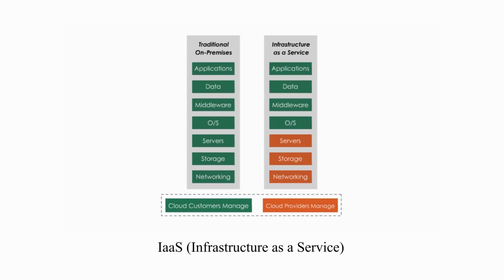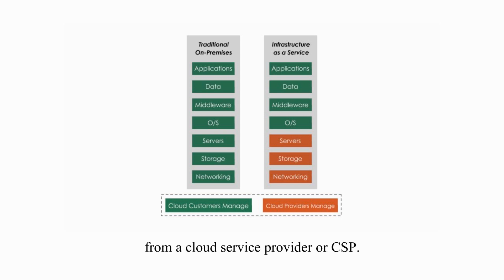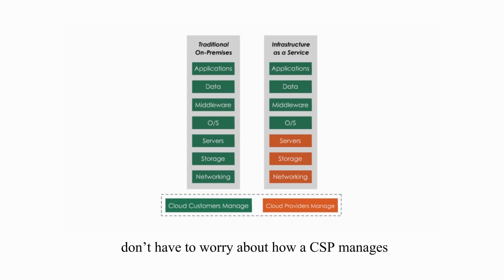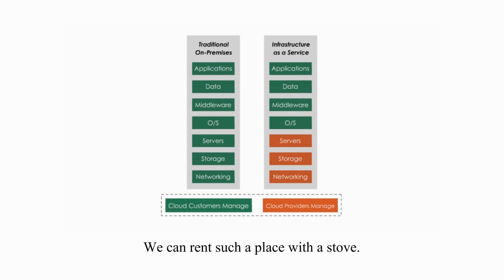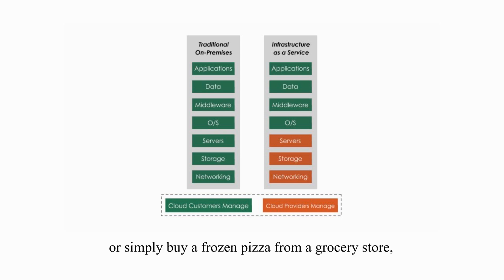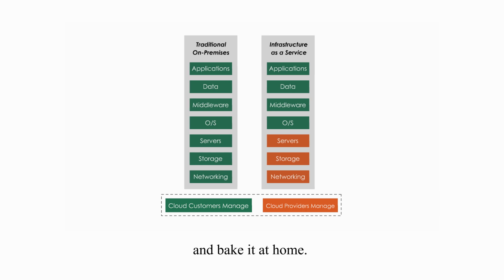IaaS — Infrastructure as a Service. IaaS is like renting a data center from a cloud service provider, or CSP. In this model, we, as cloud customers, don't have to worry about how a CSP manages their servers, storage, and networks. Our job is to manage the operating systems, middleware, data, and applications. Using pizza as an analogy, we don't have to buy a place with a stove. We can rent such a place with a stove. All we need is to buy the necessary materials to make pizza, or simply buy a frozen pizza from a grocery store and bake it at home.